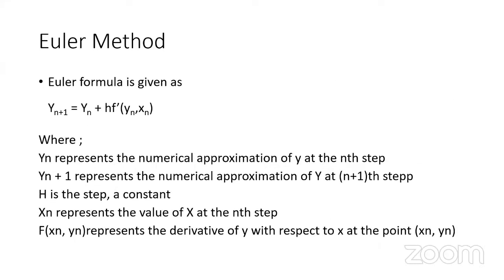Euler's formula is: Y(n+1) = Y(n) + H · f(Y(n), X(n)). Here, Y(n) is the numerical approximation at the current step (the preceding step), Y(n+1) is the approximation at the next step, X(n) is the value of x at the preceding step, and H is the step size — the constant used to move from one slope to the next.